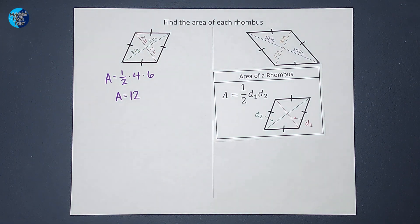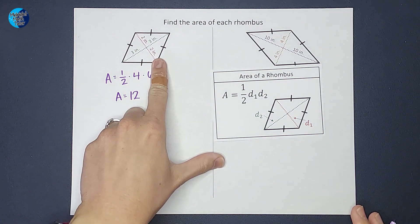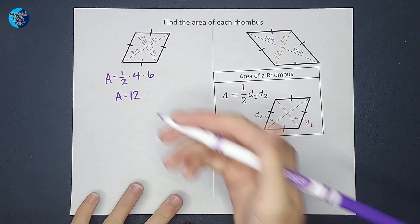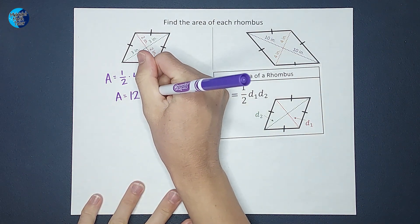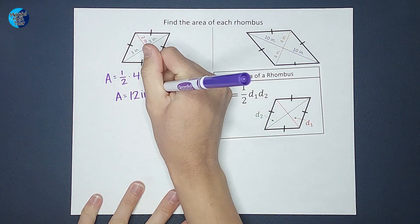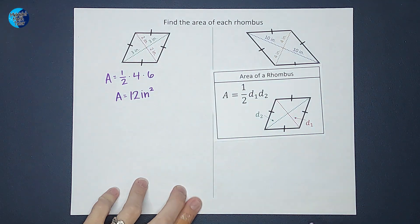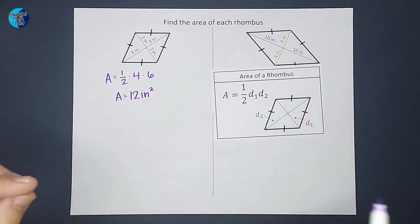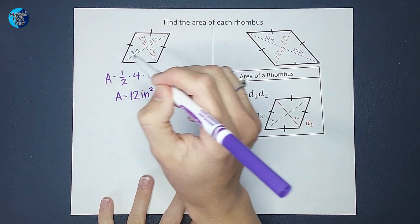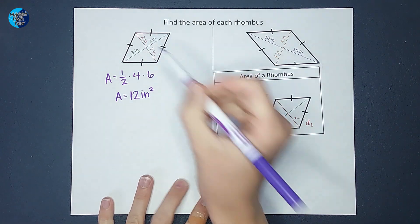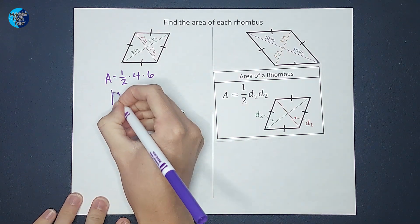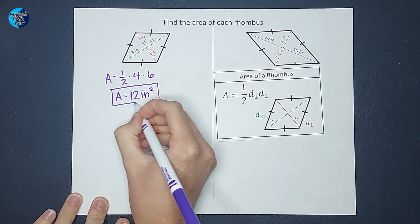But whenever we're doing area, we've got to pay special attention to our units. So we are 12 inches. And because it's area, it's inches squared, right? We're trying to figure out how many little boxes that are one inch by one inch would fit inside of this rhombus. So there it is.